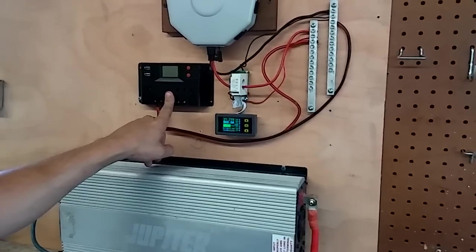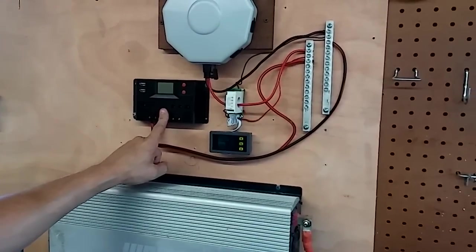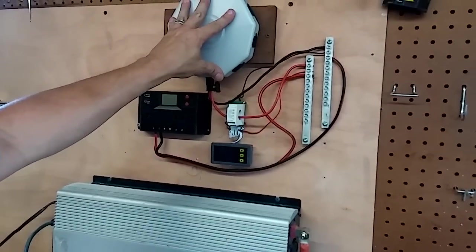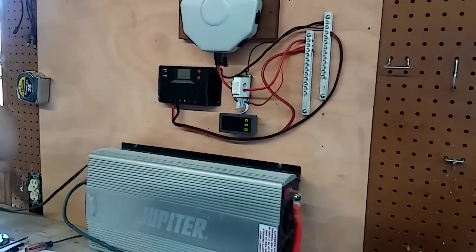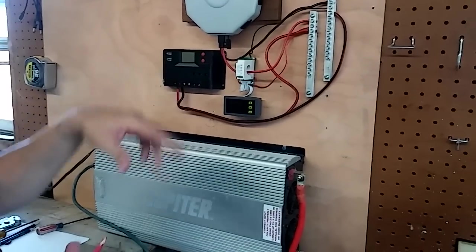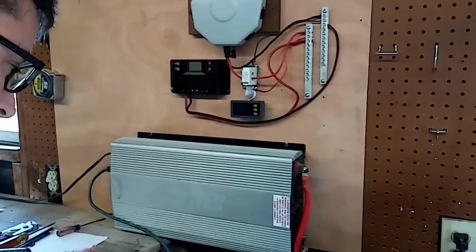So I'm gonna stick with the original charge controller. It seems to work better and I just wanted to show you that I should be getting 16 amps possibly when I get the battery down to 11 volts. And like I said, I'm coming right off of the battery.